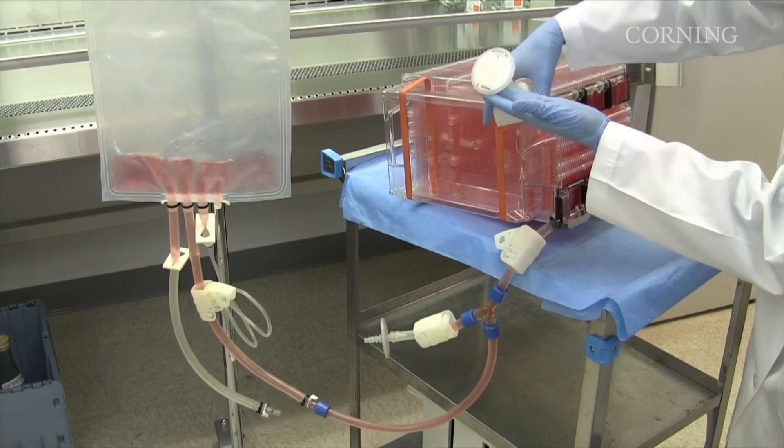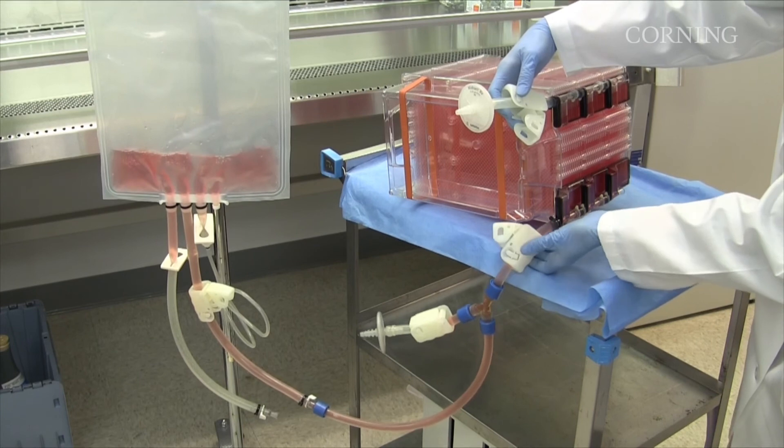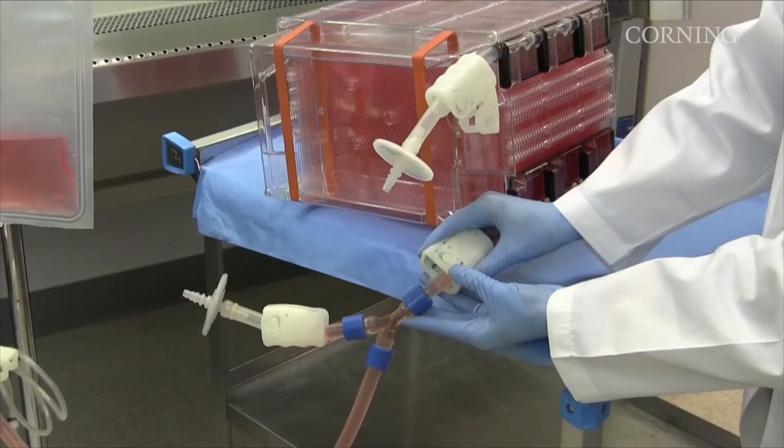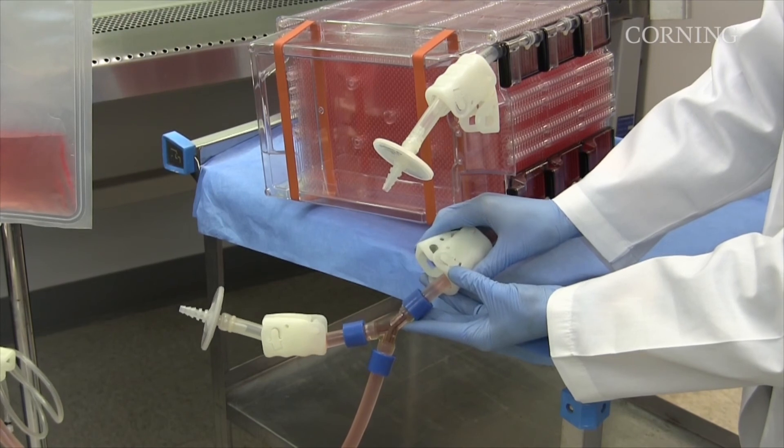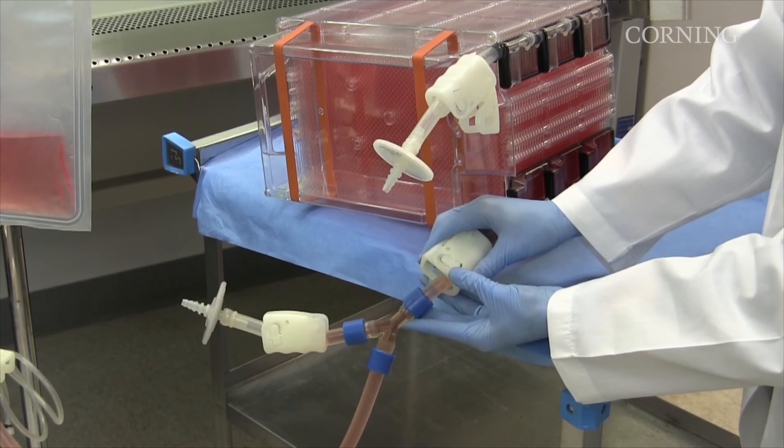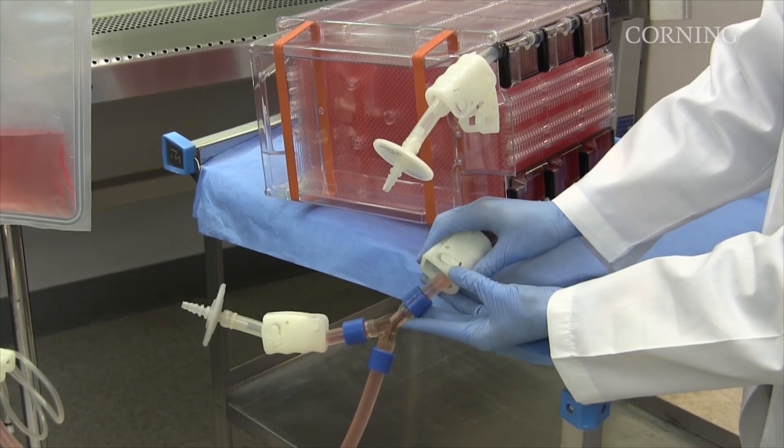Open the clamps on the collection container and the liquid handling tubing of the HyperStack vessel to initiate drainage. After liquid begins to drain, open the vent tubing clamp to allow air into the HyperStack vessel to continue the liquid flow. As with filling, do not allow the liquid to flow too quickly. Use the liquid handling clamp as a handbrake to control the flow or vary the height of the collection vessel.